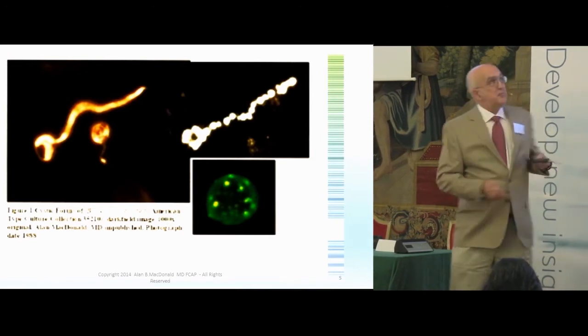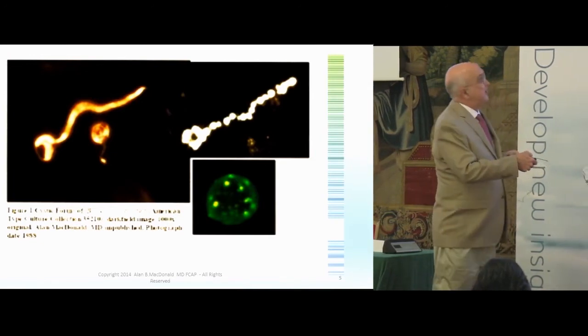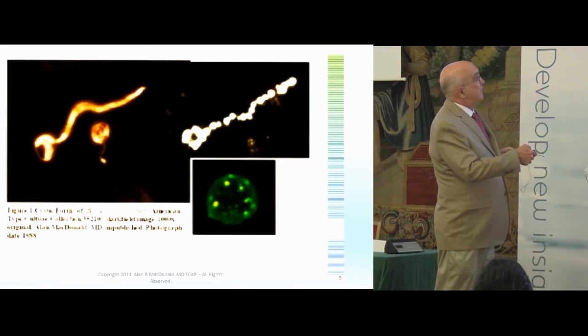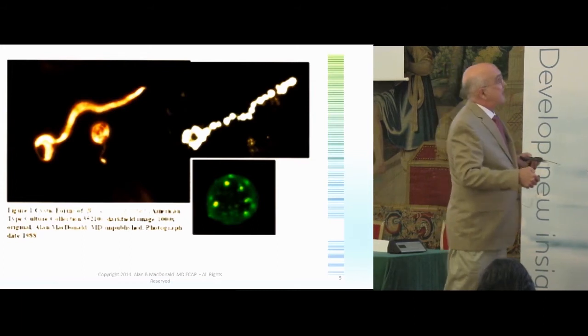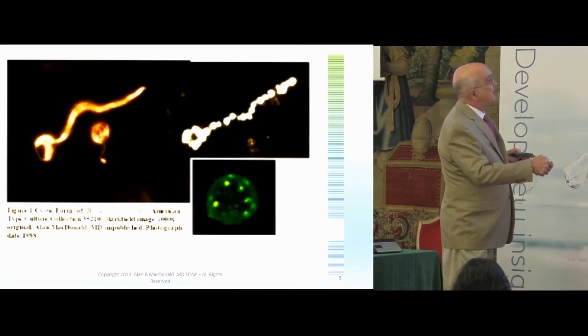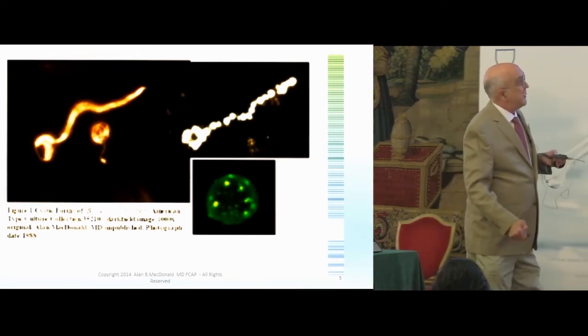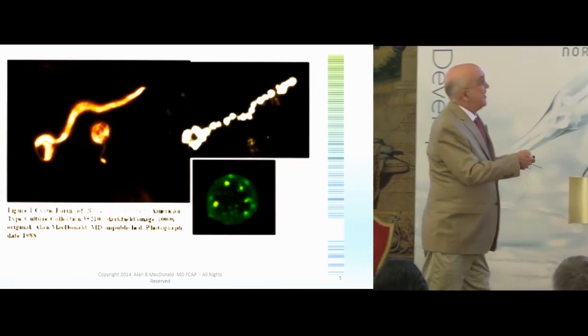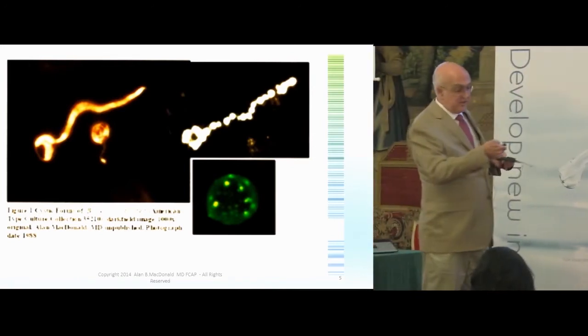Anyway, this is the path for transition to a cystic form. From the spiral form, it rounds up, and here's another form where you can see it's all coiled up inside with a little tail coming out. Often cystic Borrelia have tail structures that come out and stick out like a wagging tail of a dog.